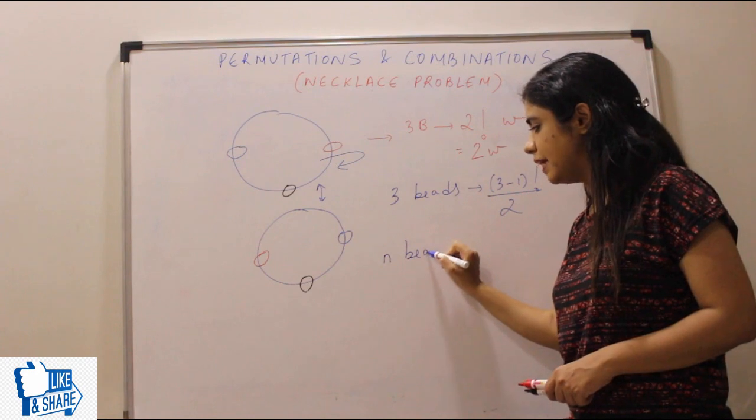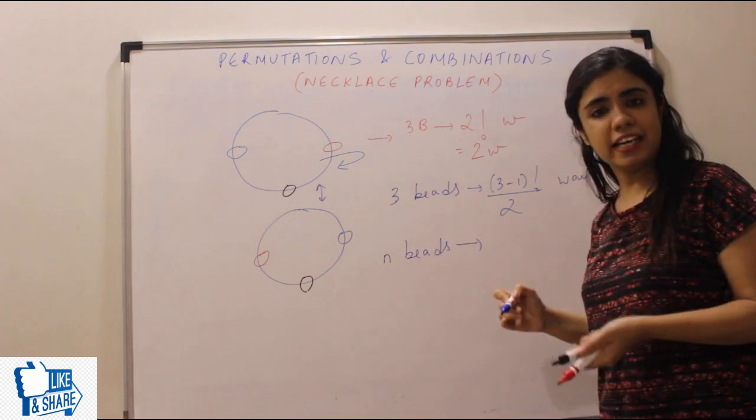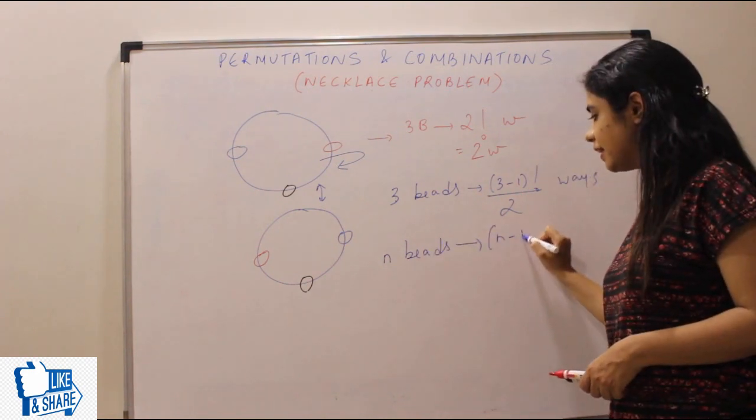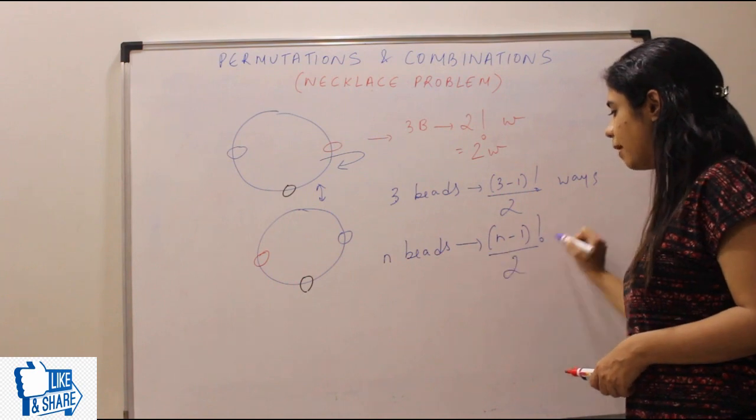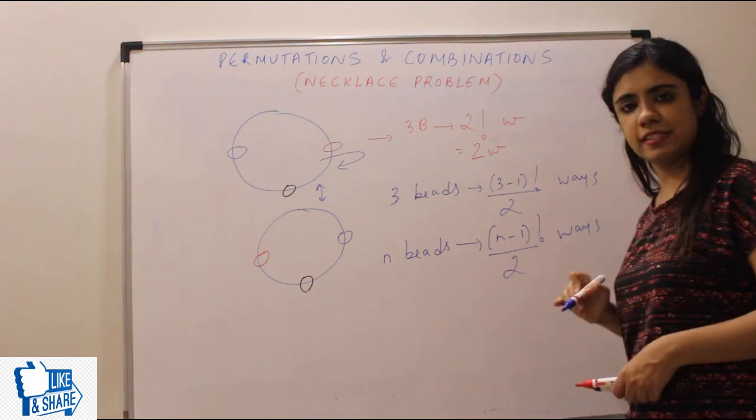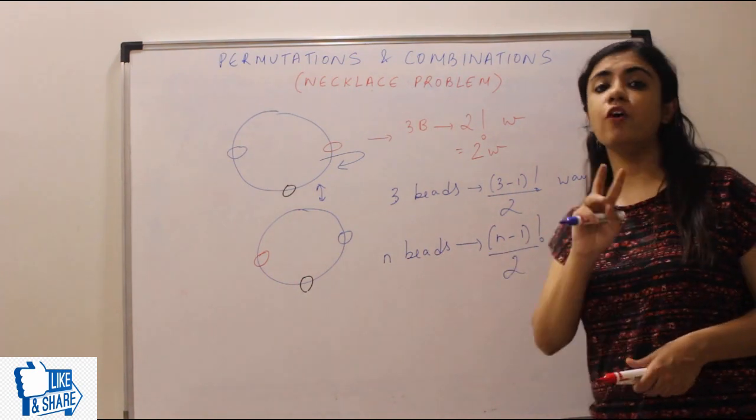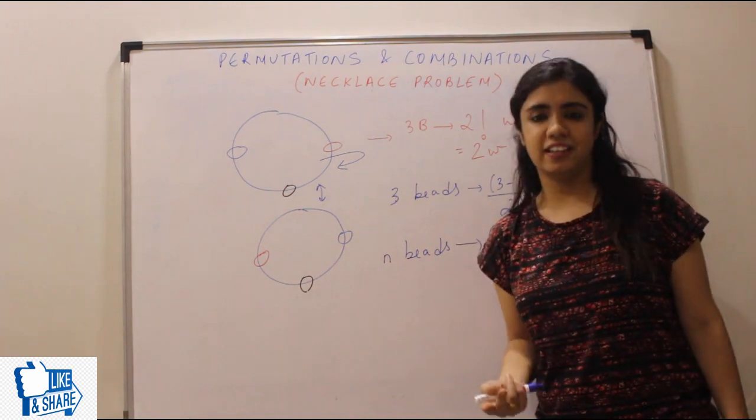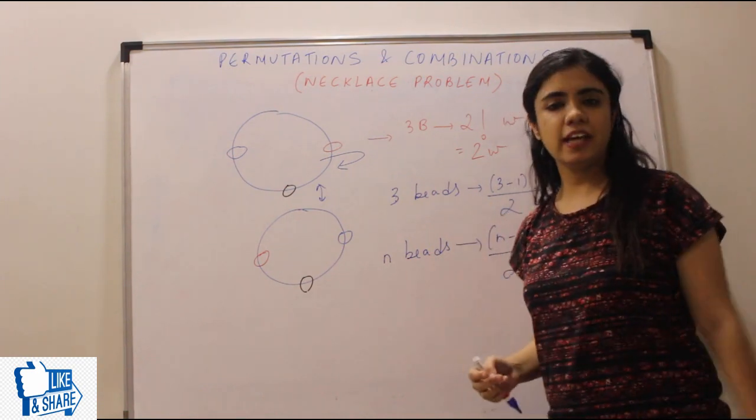That is the reason your number of ways become half. So that means n beads can be arranged in n minus one factorial by two ways. Either upon two aata hai, for people, upon two nahi aata hai.